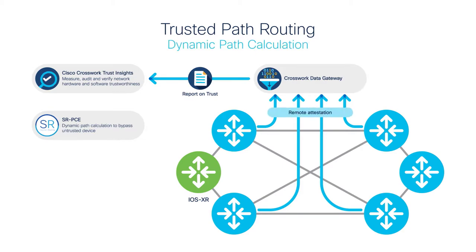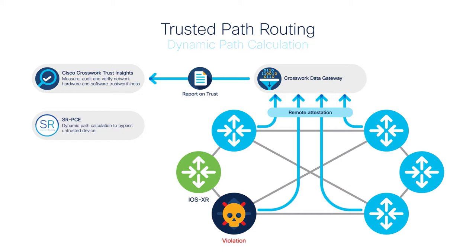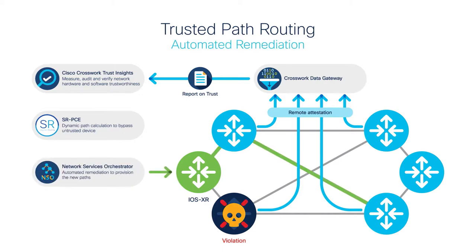In the background, a trust verification service does a periodic evaluation of trust across all the network devices. If the verification service cannot establish the trusted state of a device, the device is taken out of the network path for sensitive flows. Cisco Network Services Orchestrator deploys services with a trusted transport intent that guarantees sensitive traffic transits only through trustworthy devices.